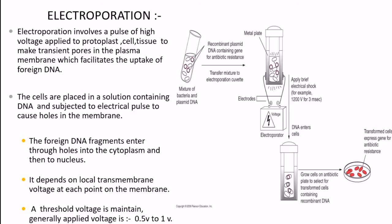Electroporation is a widely used method to transfer genes in plants when they have thin cell walls. It involves a pulse of high voltage applied to protoplasts - this voltage ranges from 0.5 to 1 volt. This creates transient pores in the plasma membrane which facilitates uptake of foreign DNA.